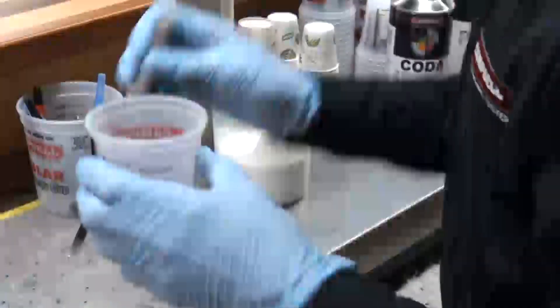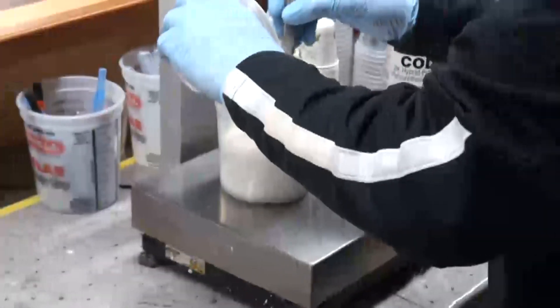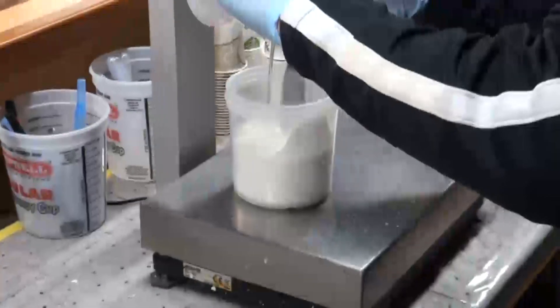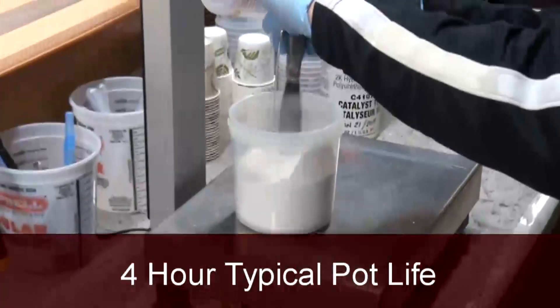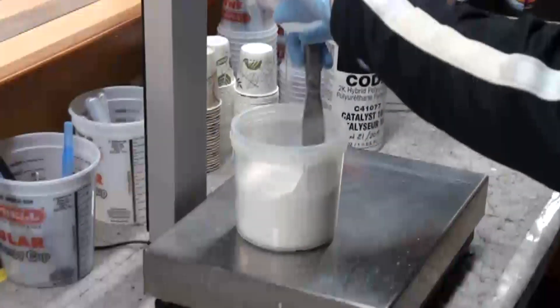The pot life of all polyurethanes is dependent on temperature and humidity conditions in the shop. But with a 4 hour typical pot life, COTA is longer than many, which results in less waste and remixing.